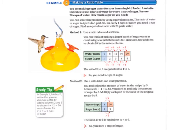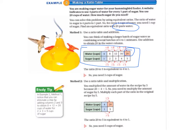Find an equivalent ratio with 20 parts of water. Method 1 is to use a ratio table and addition. We can think of making a larger batch as combining several batches of the 4-to-1 mixture. The table shows: batch 1 has 4 cups water and 1 cup sugar; batch 2, 8 and 2; batch 3, 12 and 3; batch 4, 16 and 4; and finally 20 cups of water and 5 cups of sugar. The ratio 20 to 5 is equivalent to 4 to 1, so we need 5 cups of sugar.